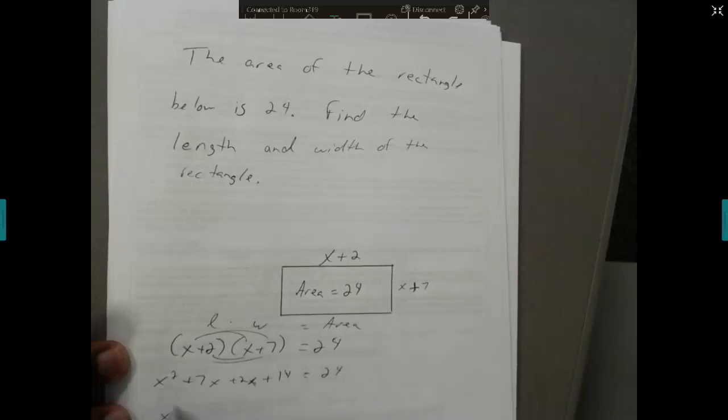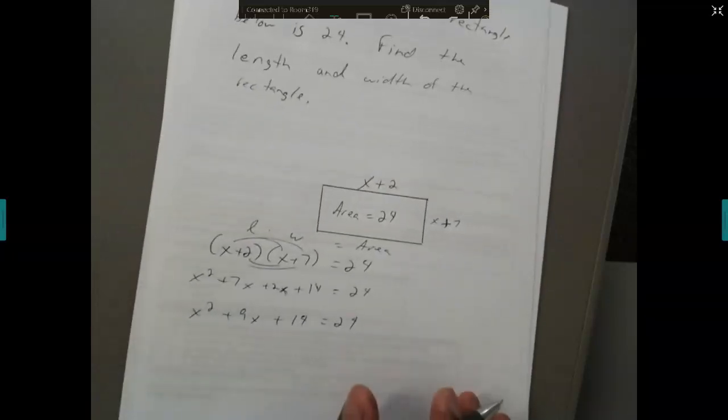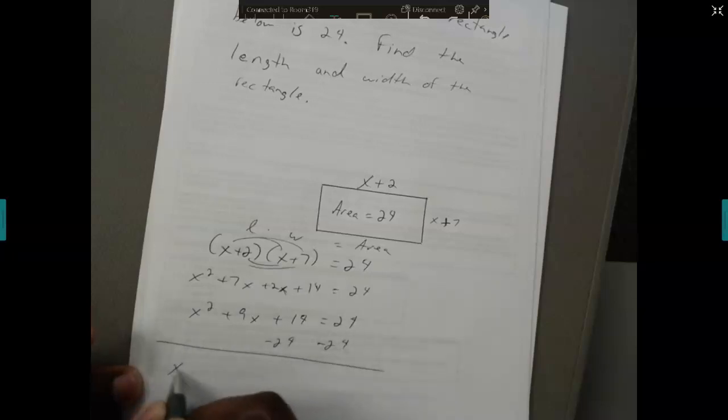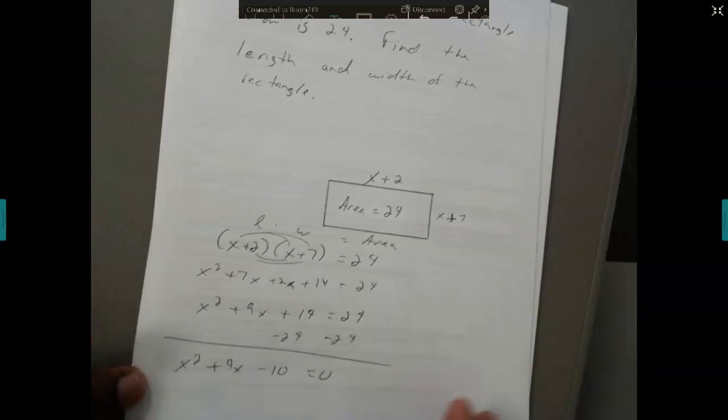This gives you x squared plus 9x plus 14 equals 24. This is a quadratic equation. To solve a quadratic equation you need one side to be 0, so I'm going to subtract 24 from both sides and I will get x squared plus 9x minus 10 equals 0.